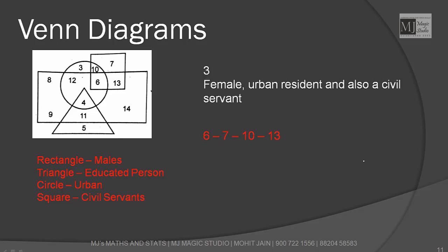Female, urban resident, and also a civil servant. There is no figure representing female. That means for female I can call it minus R. Urban resident is plus C. Also civil servant is plus S. I am looking for S + C - R. S has 7, 10, 6, 13. Plus C - looking for 10 and 6. Now we need minus R. We are left with only 10. Option 10 fits in.